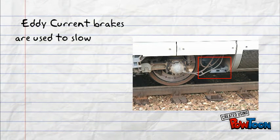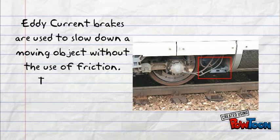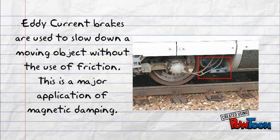Eddy current brakes are used to slow down a moving object without the use of friction. This is a major application of magnetic damping.